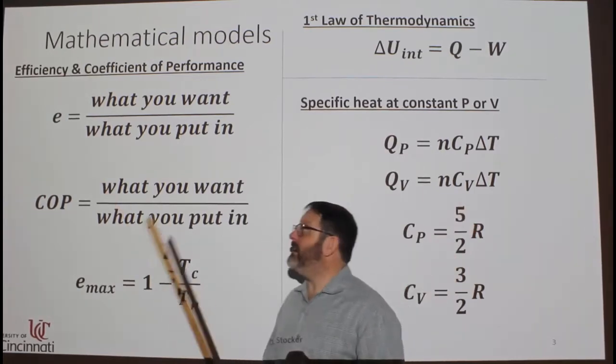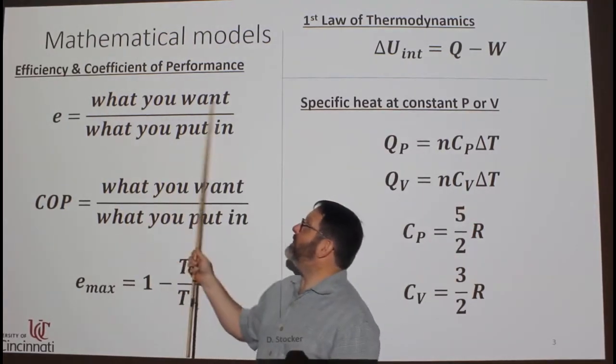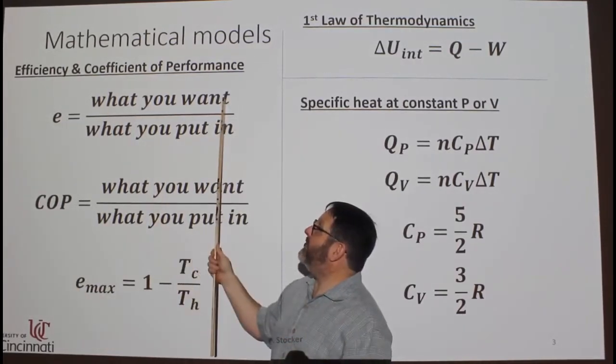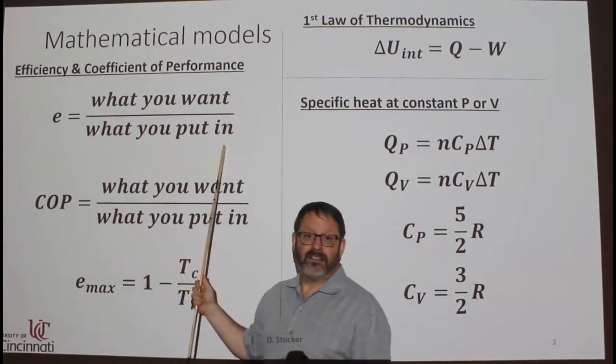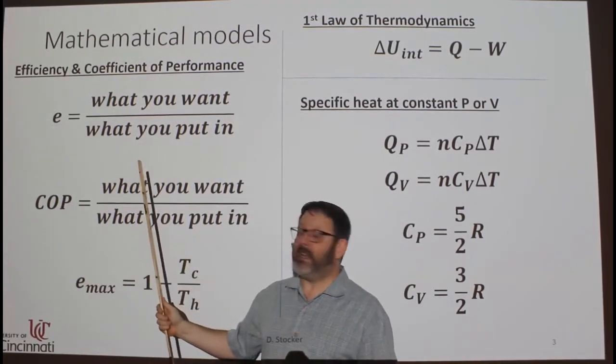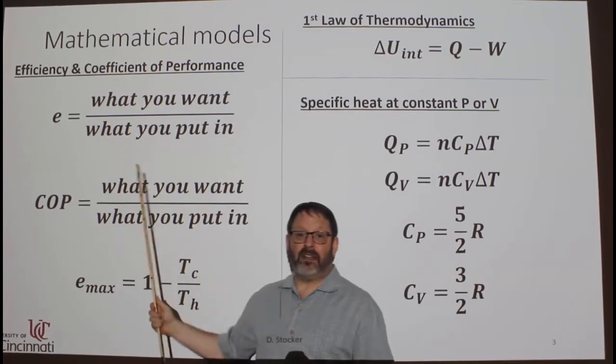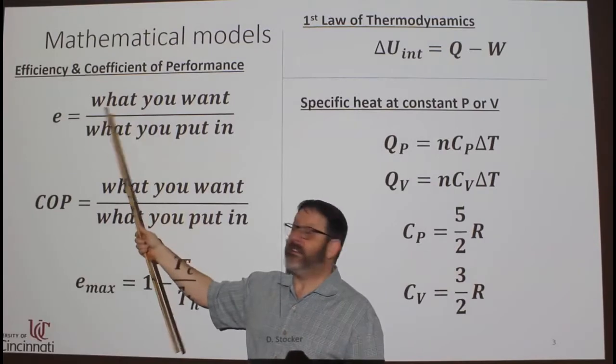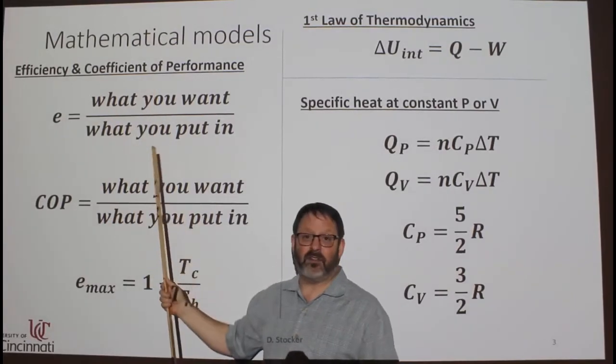So her efficiency for hitting the target, what she wants is to hit the target. So she hit the target 10 times out of 10 times. Her efficiency is 100%. For me, what I put in, I again shot 10 arrows, but only 5 of them went where I wanted. So my efficiency is 5 over 10.